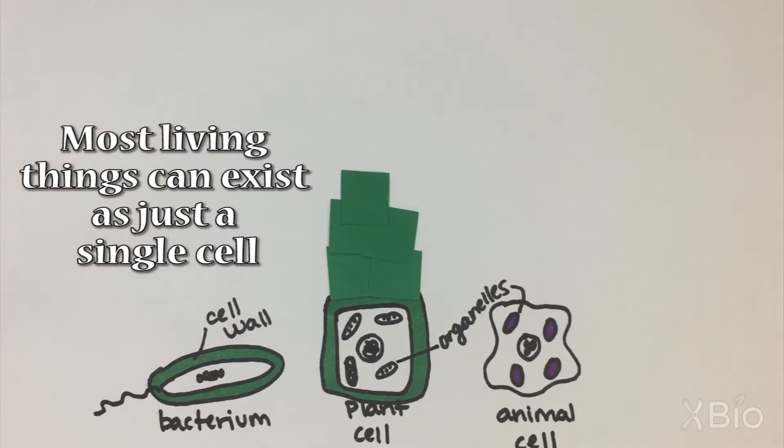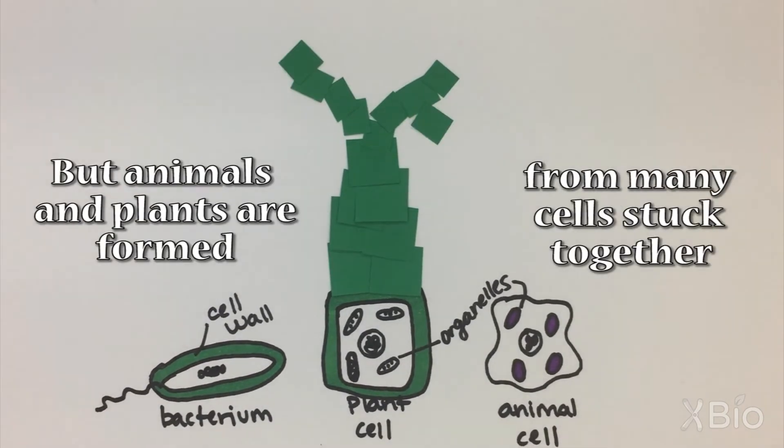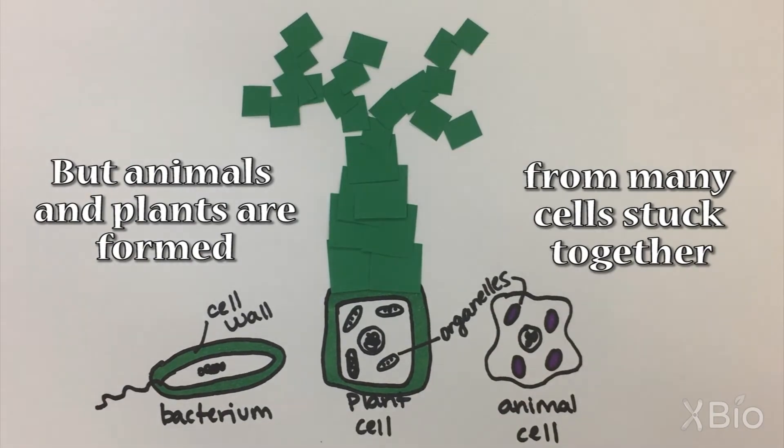Most living things can exist as just a single cell, like bacteria or amoeba. But animals and plants are formed from many cells stuck together.